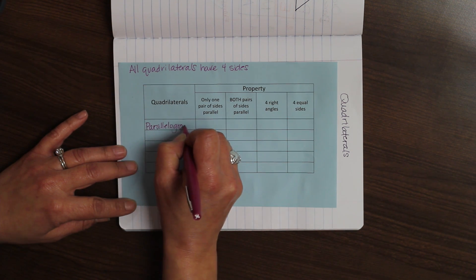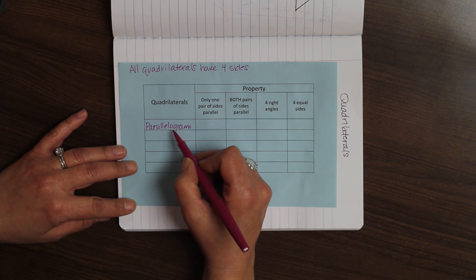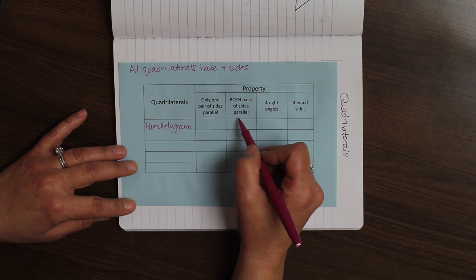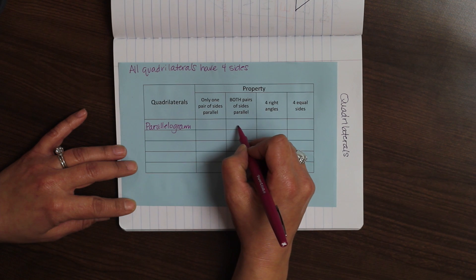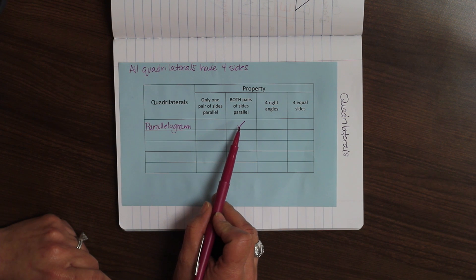Parallelogram. Only one pair of sides is parallel in a parallelogram. No, that's not true. So, I'm going to leave this one blank. Both pairs of sides are parallel. This is true. So, I'm going to check that off. So, one of the attributes of a parallelogram is that both pairs of sides are parallel.